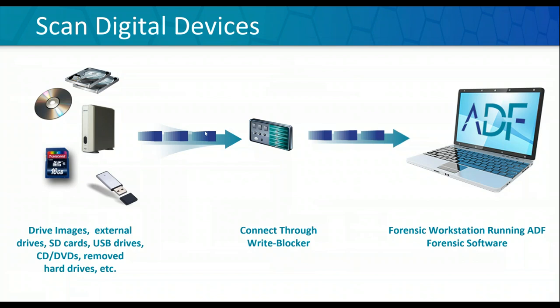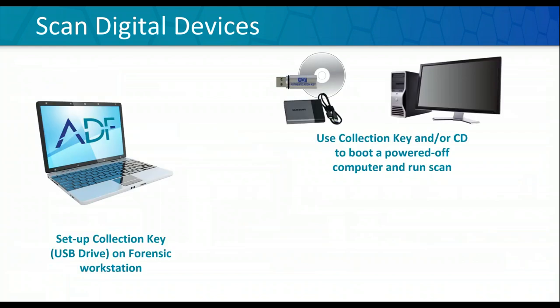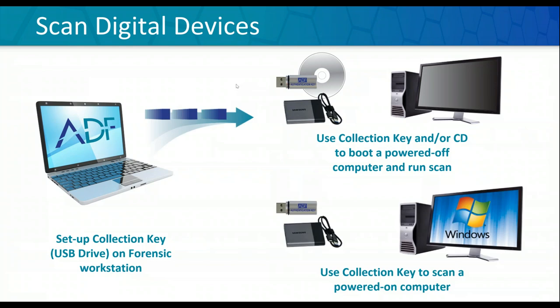The second way to use DEI: set up a USB device or collection key to go out into the field or use in the lab on another machine. We make it bootable so you can boot into a Windows, Mac, or Linux machine and do a scan. We also prepare it to run live — so if you have a Windows machine up and running on scene, you plug in the USB, start your scan, gather all that information, and move along. Two ways to use it: at the lab or in the field, and in the field you can do a boot or a live scan.